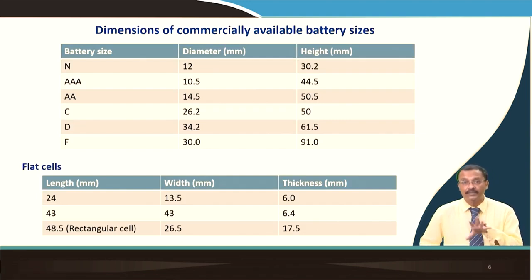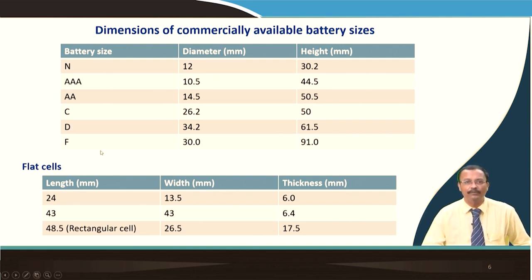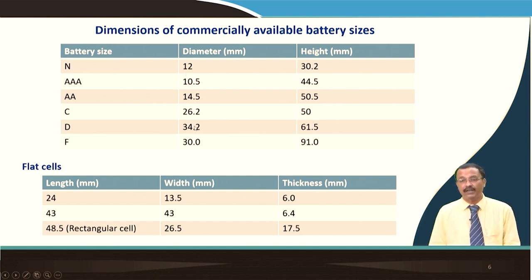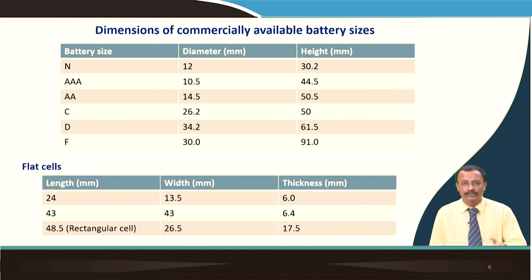There are various dimensions of commercially available batteries. When you go to the market, you mostly talk about AA or AAA type batteries, which denote the diameter and height of the battery. AAA is a little thinner in diameter compared to AA, and the C battery is fatter. Battery sizes depend on their diameter and height and follow international standards. There are also certain flat cells.